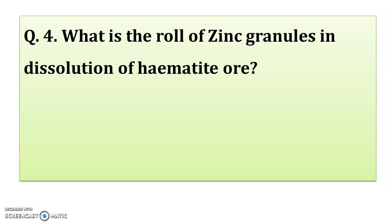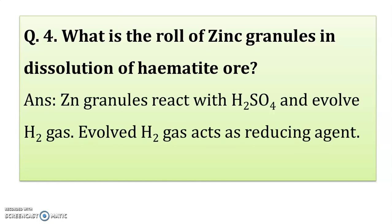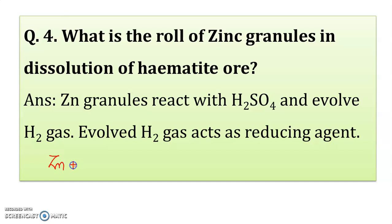What is the role of zinc granules in the dissolution of hematite ore? During the practical, we dissolve the hematite ore. Sulfuric acid is added first, then we add the zinc granules. These zinc granules react with sulfuric acid and evolve hydrogen gas. The zinc reacts with H₂SO₄ and gives zinc sulfate ZnSO₄ plus hydrogen gas evolved.